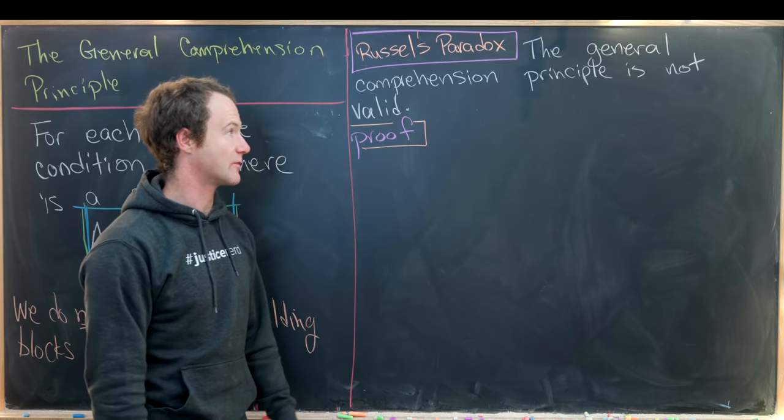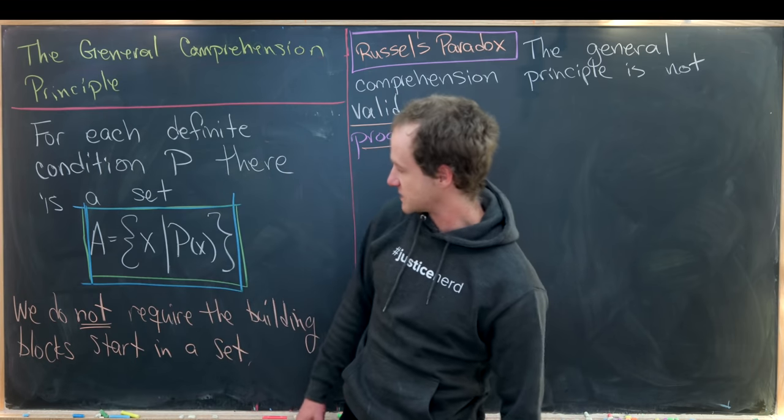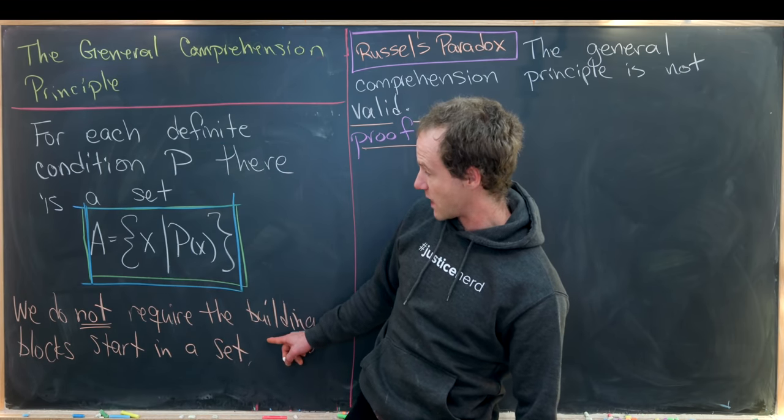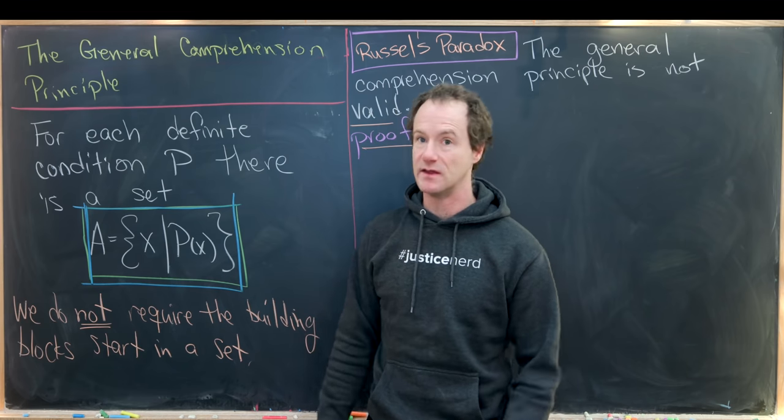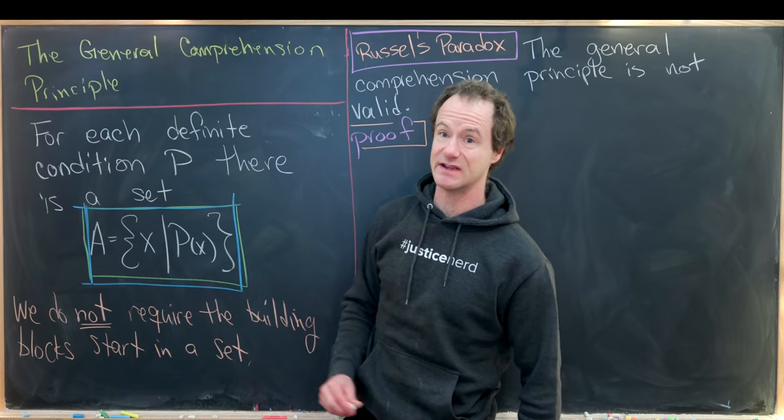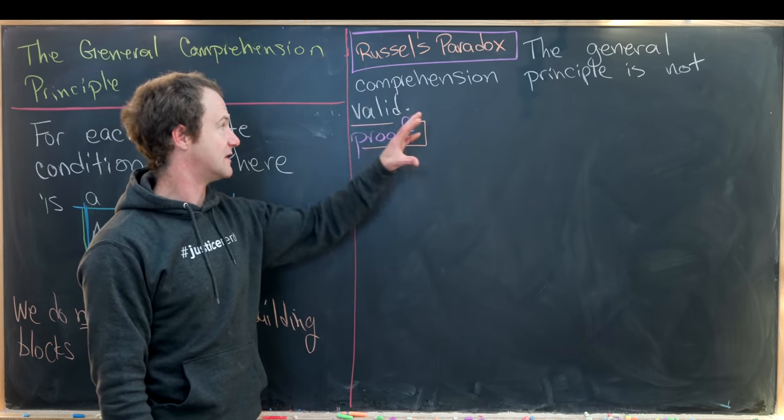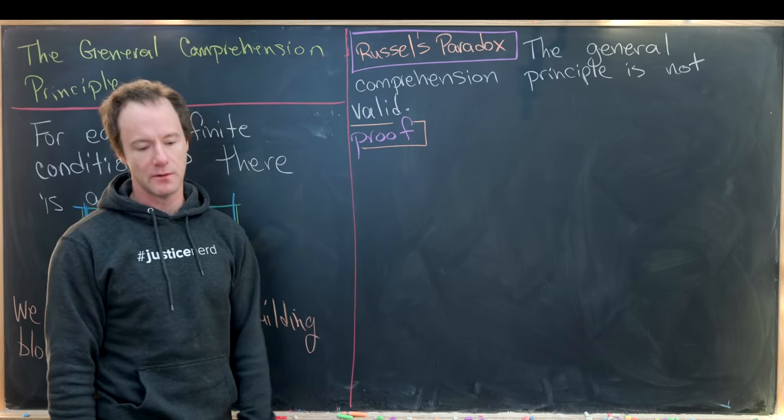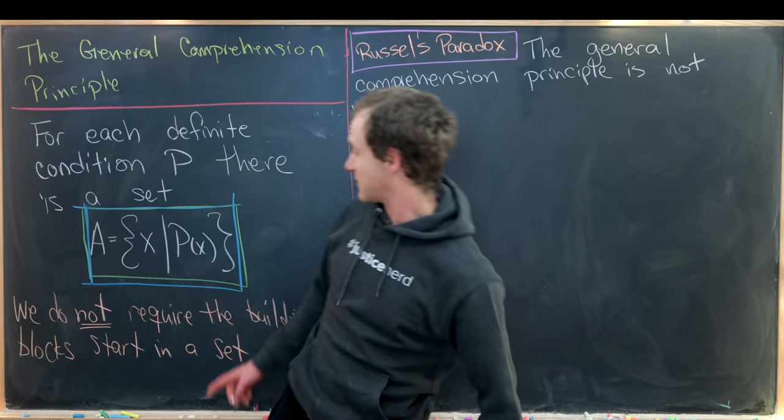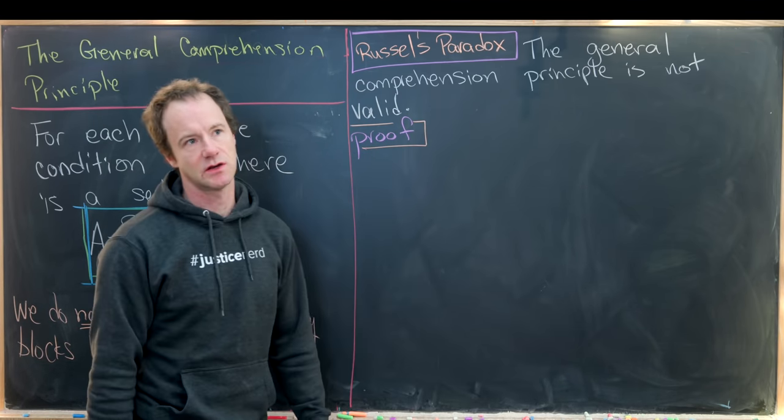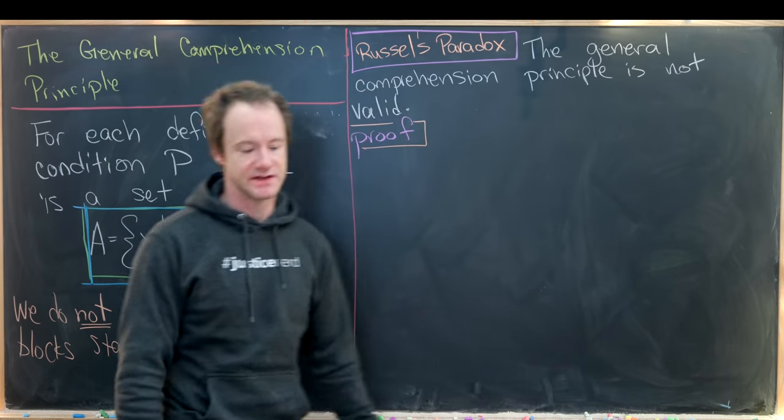And our path to see that starts with something called Russell's paradox. And that says the general comprehension principle is not valid. So in other words, if we remove this requirement that X starts out coming from some sort of larger set, then this is not something that is reasonable to assume. So how will we prove this fact that this is not valid? Well, we'll do it by finding something that looks like a counterexample. So in other words, we're going to have to find a definite condition where things go awry when we try to describe this set.